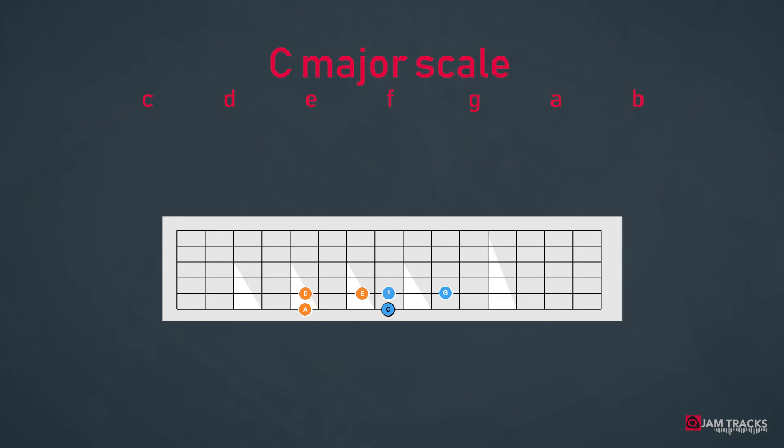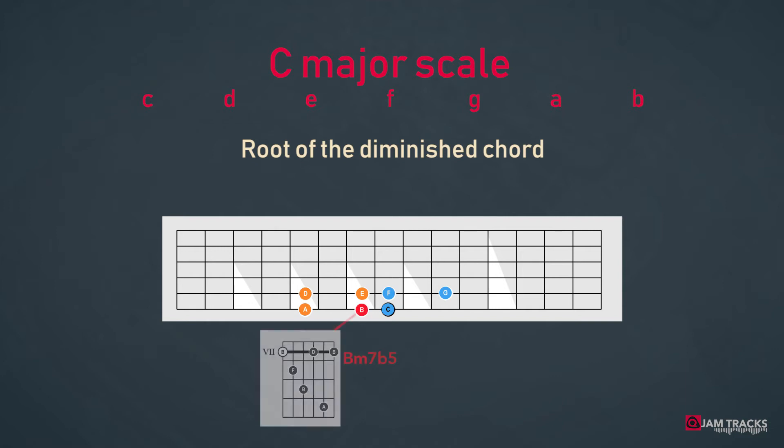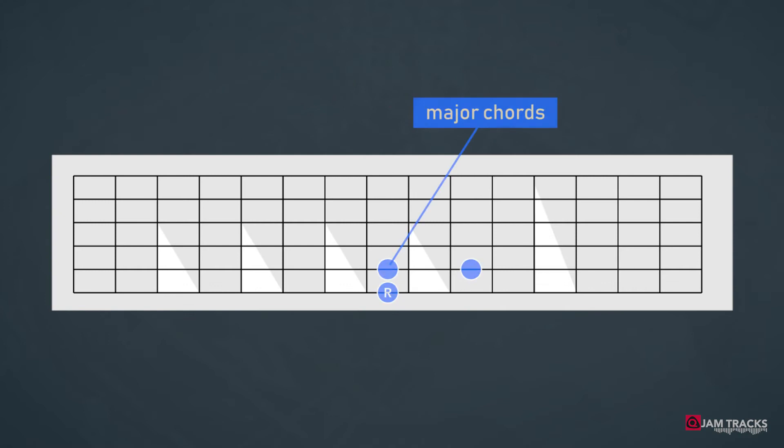In a major scale, the last note is the root of the diminished chord. This note is always placed one fret below the tonic like this. And so we have a B diminished chord. You can do this for every major key. Just pick a tonic note of any key. These are all major chords. These are all minor chords. The last note is the root of the diminished chord.